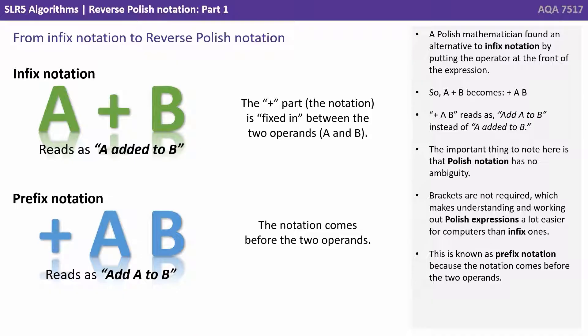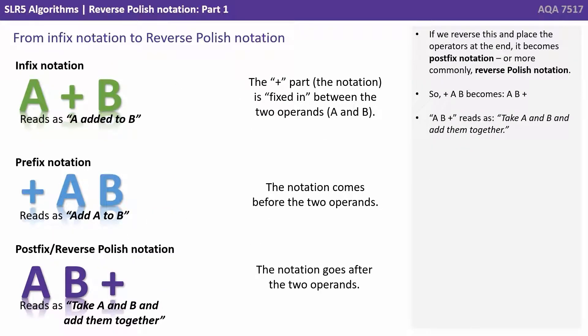This is known as a prefix notation because the notation comes before the two operands. If we reverse this and place the operators at the end, it becomes a postfix notation, or more commonly, reverse Polish notation. So plus A B becomes A B plus. We would read this as take A and B and add them together.